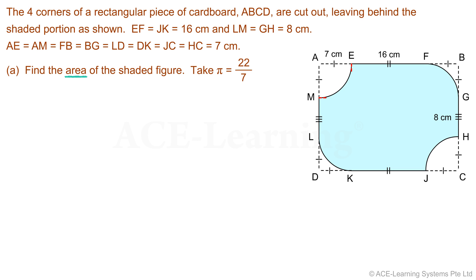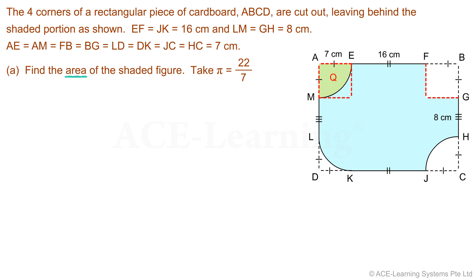Let's construct a square at the corner of the quadrant EAM. We have an unshaded part in this square — let's call it area P. Construct a square at the quadrant FBG. We have an unshaded part in this square — let's call it area Q. Notice that area P is equal to area Q.